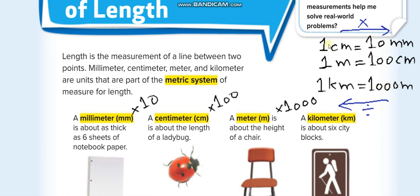These are bigger units and these are smaller units. Converting from bigger to smaller, we multiply. Converting the opposite way — from smaller to bigger — we divide. For example, from meter to kilometer divide by 1,000; from centimeter to meter divide by 100; and from millimeter to centimeter divide by 10.